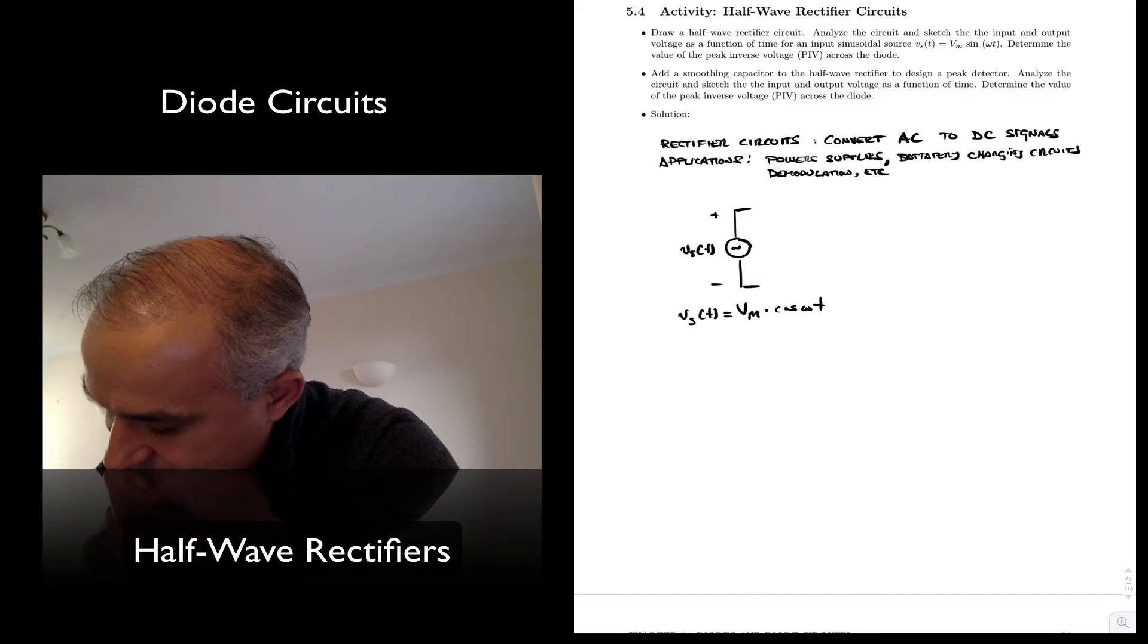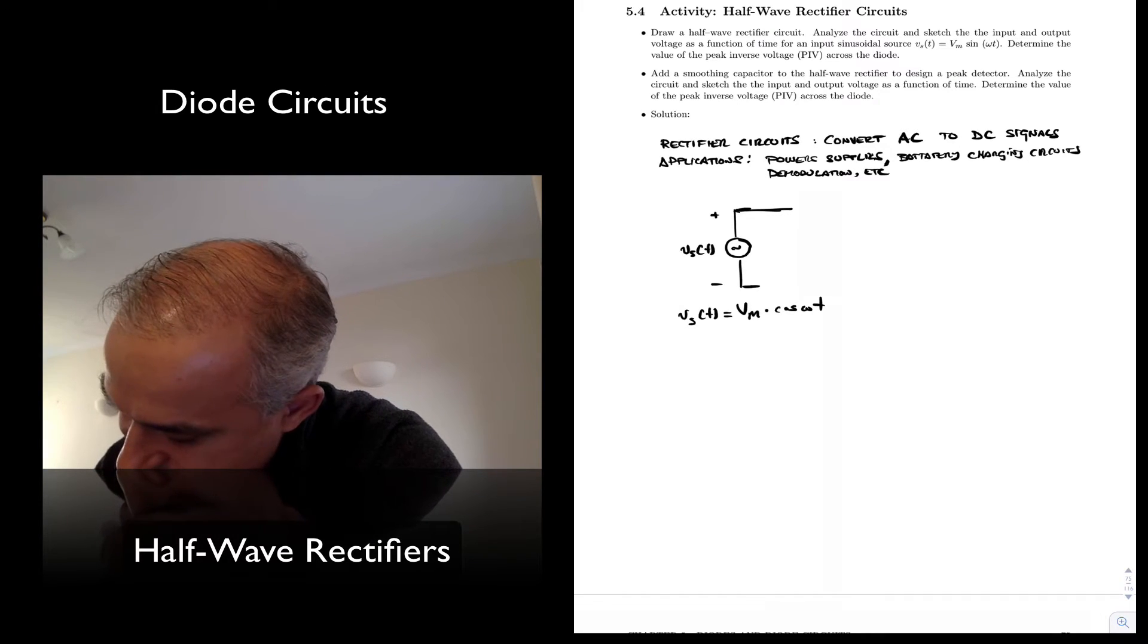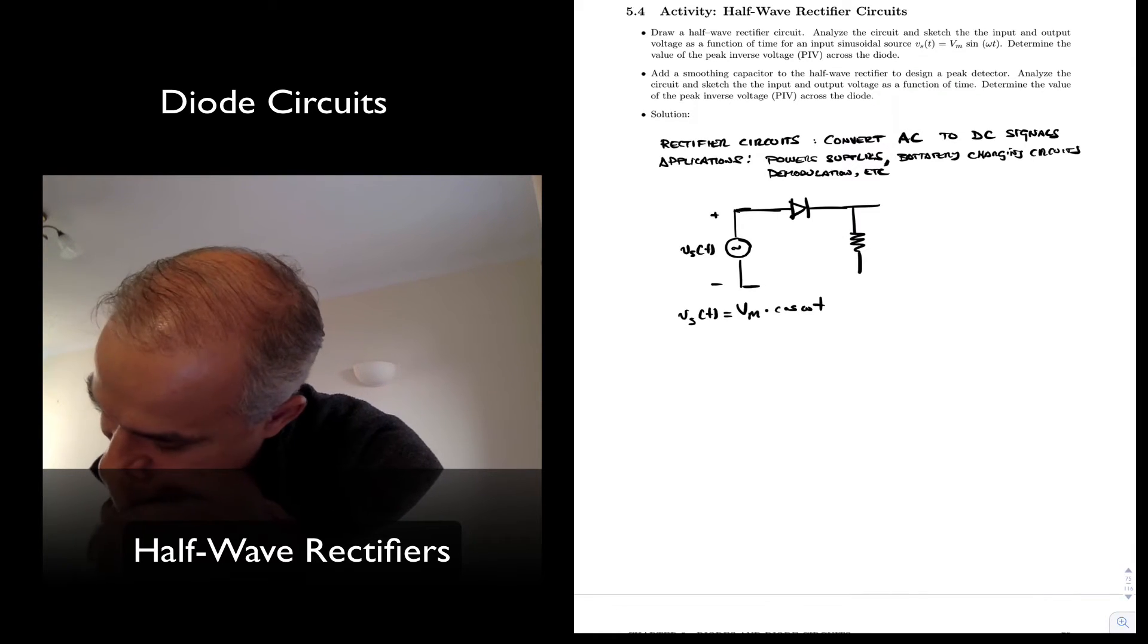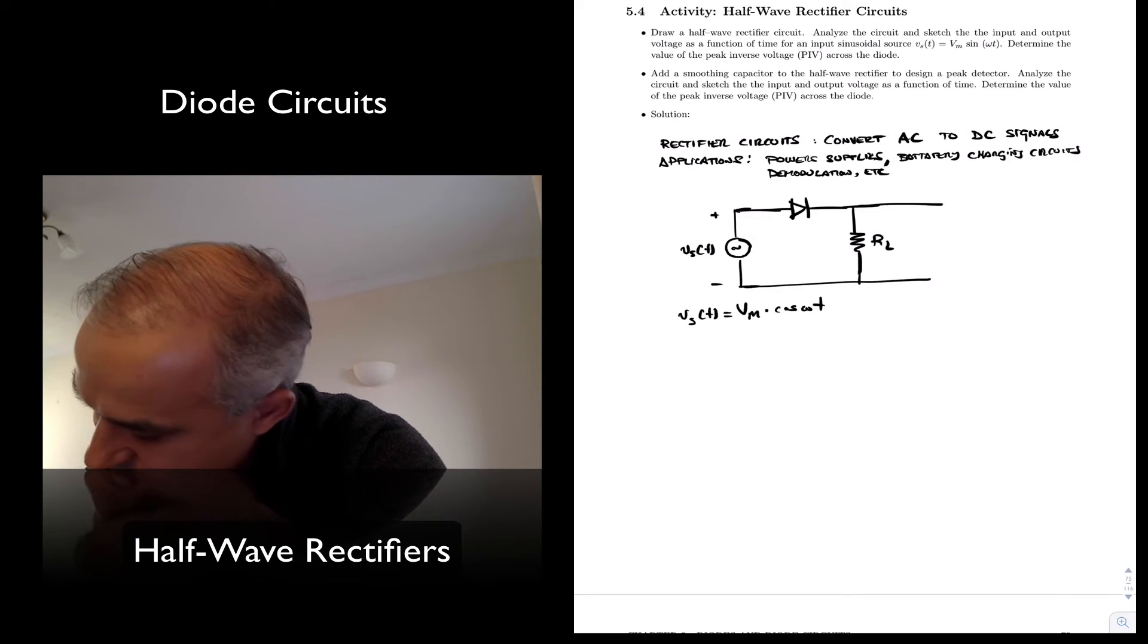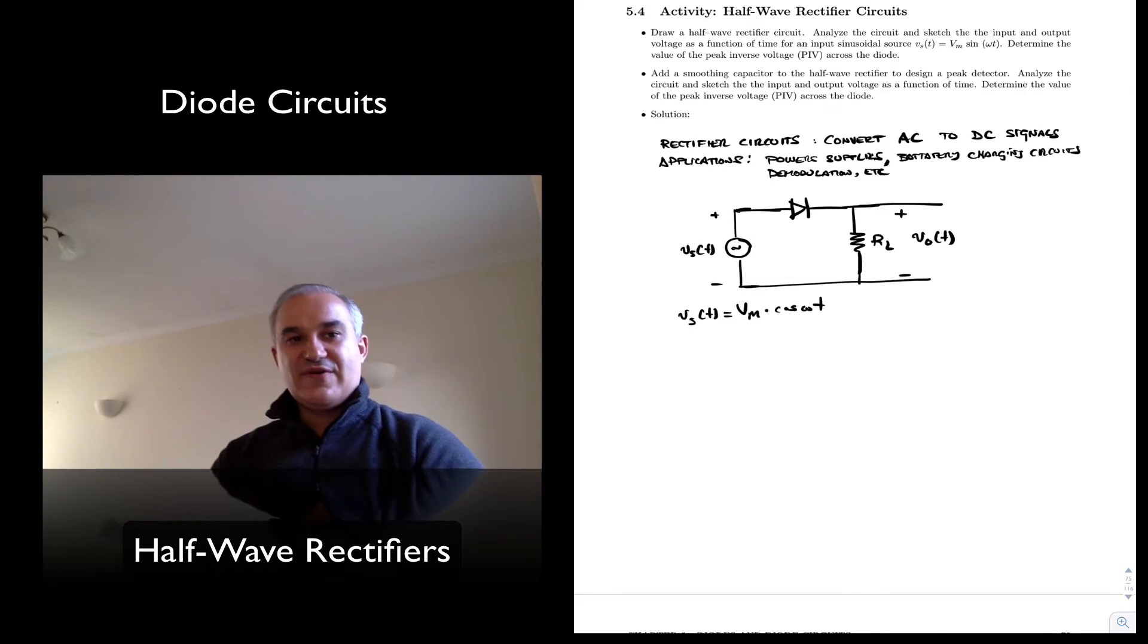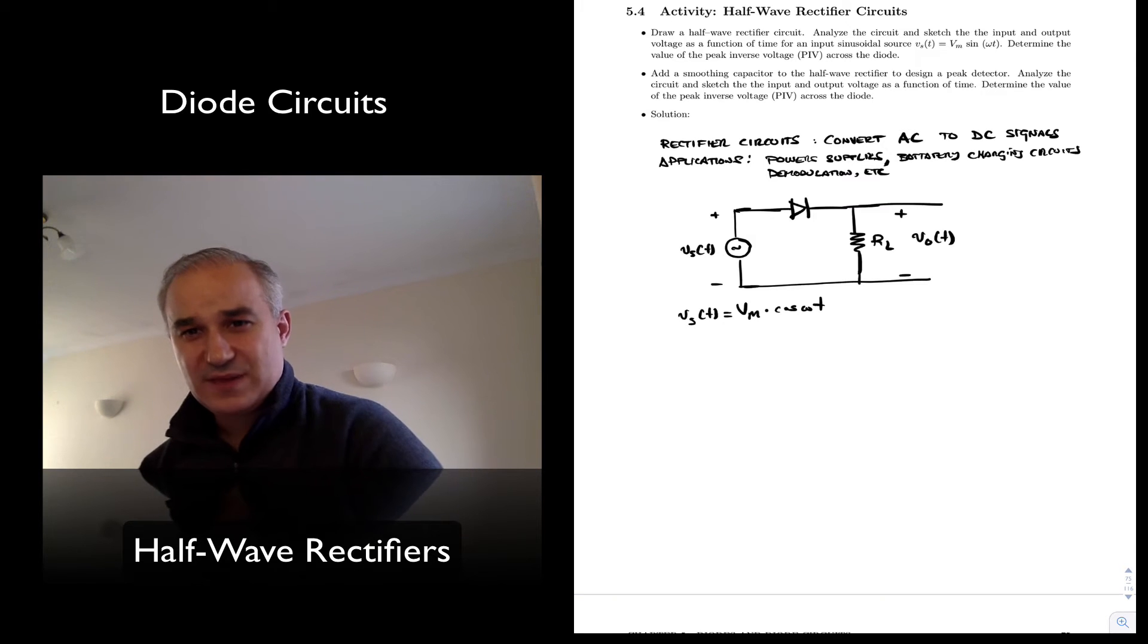So if we connect this source with a diode, and then we connect it to the load - right here, the load circuit, RL. So this is plus, minus, and this is the output as a function of time. We have a rectifier circuit. Let's analyze it.